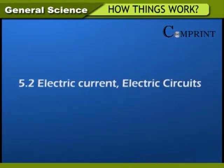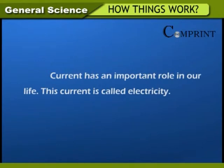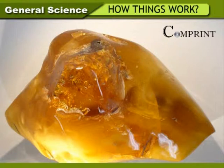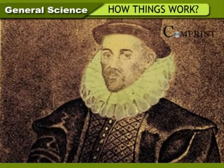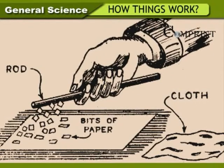Electric current and electric circuits. Current has an important role in our life and is called electricity. In 600 BC, a Greek scientist Thales used his woolen coat to clean amber and observed a strange behavior — the amber and woolen coat started attracting pieces of paper and cardboard. Later, in the early 16th century, an English doctor Gilbert proved that a glass rod attracts pieces of paper when rubbed with a silk cloth. He named it electricity.